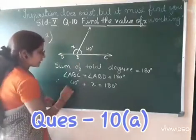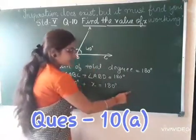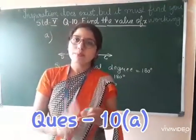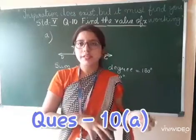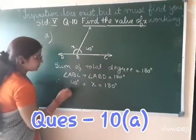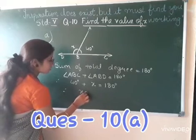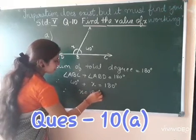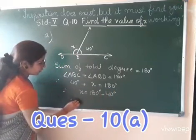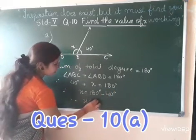Therefore angle ABC plus angle ABD is equal to 180 degrees. Therefore, what is angle ABC? 40 degrees. Put value angle ABD we don't know, it is X, equals 180 degrees.